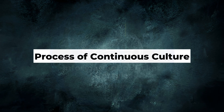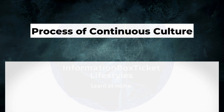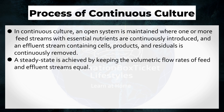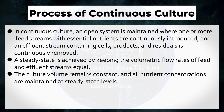Process of Continuous Culture. In continuous culture, an open system is maintained where one or more feed streams with essential nutrients are continuously introduced, and an effluent stream containing cells, products, and residuals is continuously removed. A steady-state is achieved by keeping the volumetric flow rates of feed and effluent streams equal. The culture volume remains constant, and all nutrient concentrations are maintained at steady-state levels.